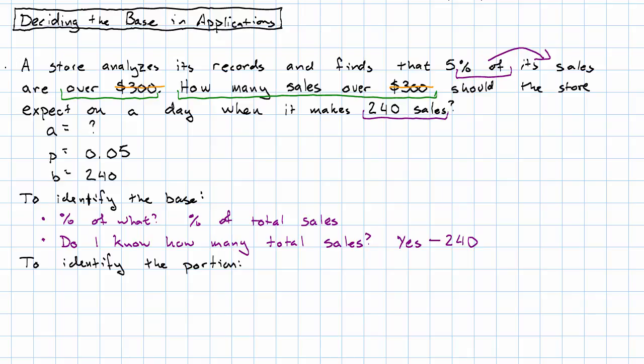Identifying the portion is a little bit more complicated because we have to look at the question a little bit more holistically to see it. We need to say, what is this percent telling me about? What does the 5% represent? And in this problem, we're told explicitly what the 5% represents. It's just the sales that are over $300.